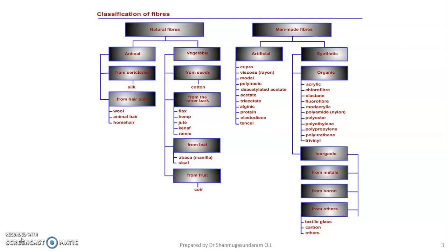Examples of animal fibers are wool, silk, horse hair, and camel hair. Under vegetable fibers, it is further classified into seed fibers, bark fibers, leaf fibers, and fruit fibers. The example for seed fiber is cotton and kapok. Bark fibers include flax, hemp, jute, kenaf, and ramie. Leaf fibers are abaca and sisal, and the example for fruit fiber is coir.